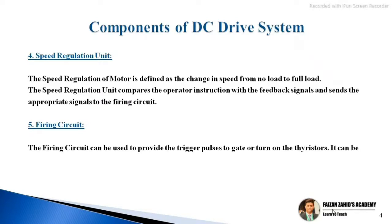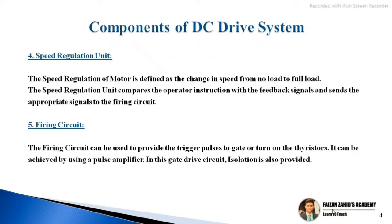The firing circuit is used to provide trigger pulses to turn on the thyristors. This can be achieved using a pulse amplifier. In this gate drive circuit, isolation is also provided. These were the main components of the DC drive system.